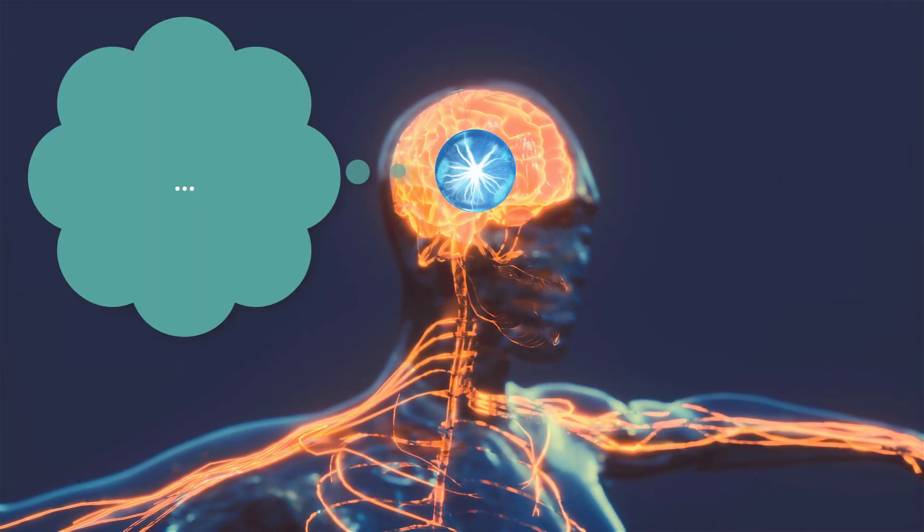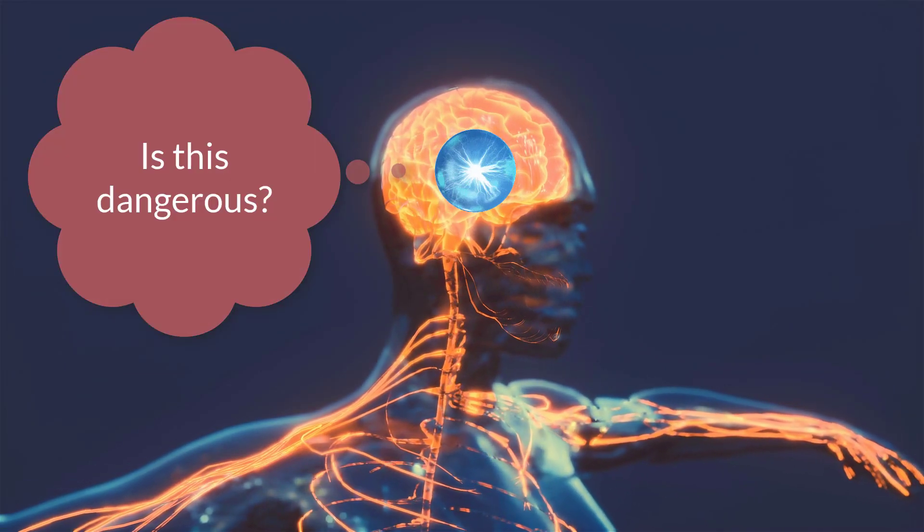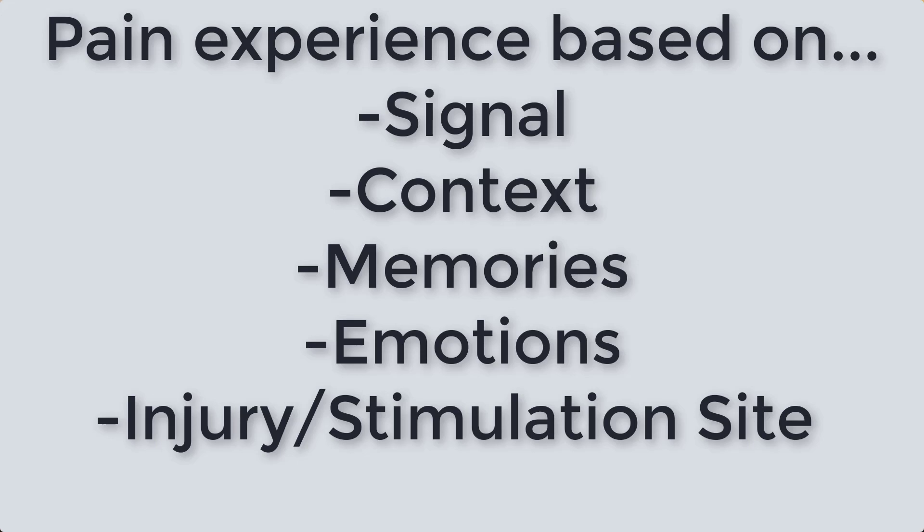Your brain interprets these electric signals and tries to determine if the signal is dangerous or not. Your brain makes the decision based on the signal and other factors that are going on, like what you're doing, memories you have, emotions at the time, and the source of the signal in your actual body. If your brain determines these signals aren't dangerous, then no pain is created. But if your brain decides that these signals are dangerous, then it creates pain and you experience this strong hurt physical sensation in your body that we know as pain.